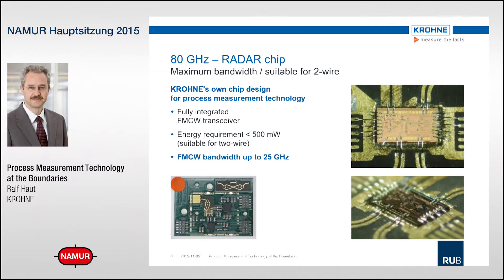This chip is suitable for two-wire measurement because the energy requirement is less than 500 mW. It includes a fully integrated FMCW — frequency modulated continuous wave — transceiver and performs a bandwidth of up to 25 GHz. It is not taken from other industries like the automotive industry; it is particularly developed for the process industry.